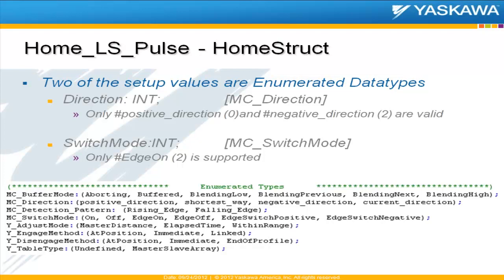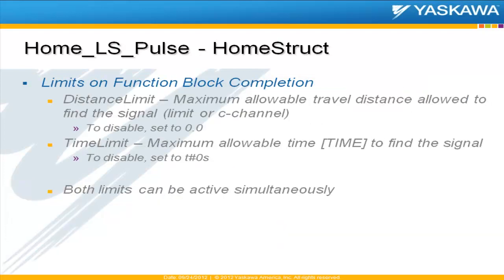There are also two tricky ones in here. The direction is an enumerated data type of MC Direction, and only positive direction or negative direction are valid — that's an integer of zero or two. The switch mode determines how it should respond to the limit switch, and only edge-on is supported, so it's really the rising edge of the switch that will activate this. You'll also notice limits for the approach and creep: a distance limit sets the maximum allowable travel before it aborts, or a time limit — they can be active simultaneously, and either can be deactivated by setting its value to zero.